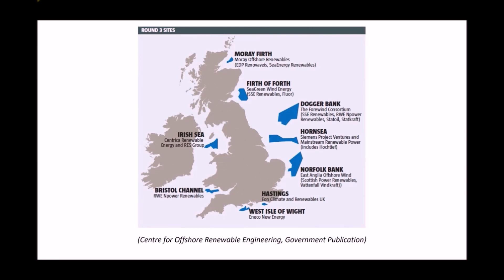Next we have our offshore wind farms, which are responsible for producing significant amounts of energy, and once again we see them surrounding the UK coastline. Note that the voltages produced at these wind farms would need to be stepped up to 400 kilovolts before being fed into the National Grid, and as discussed in earlier tutorials, that electricity also needs to be supplied at 50 Hertz.